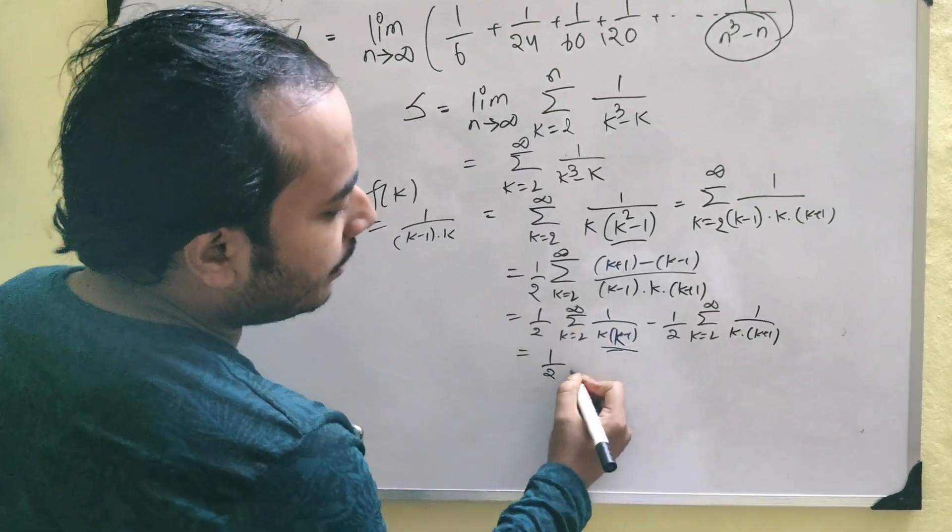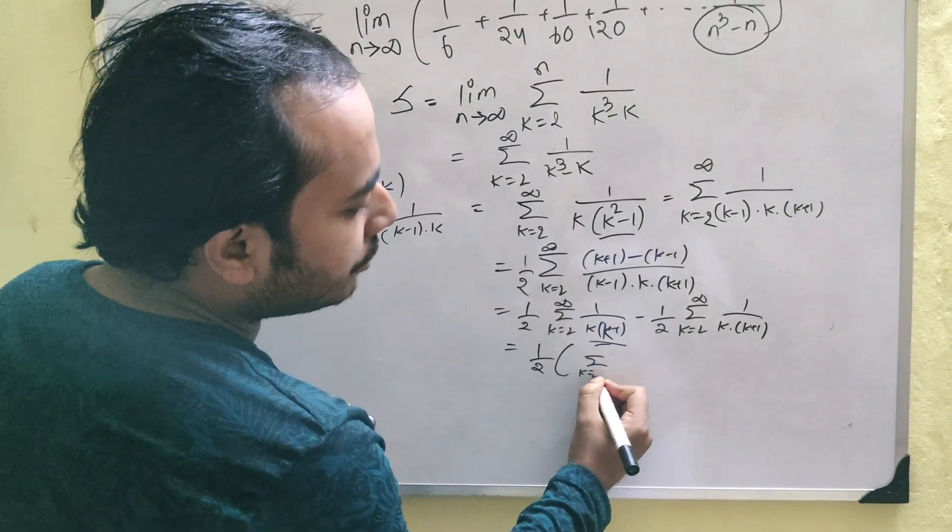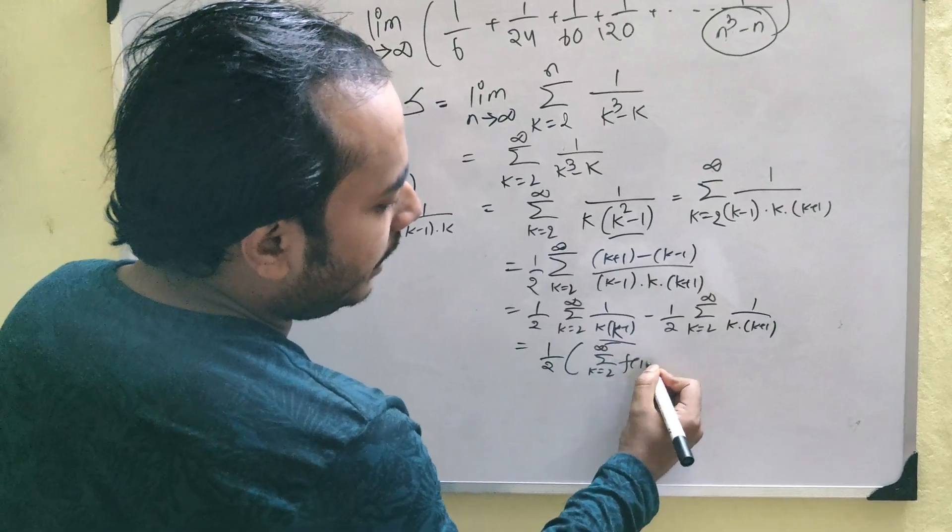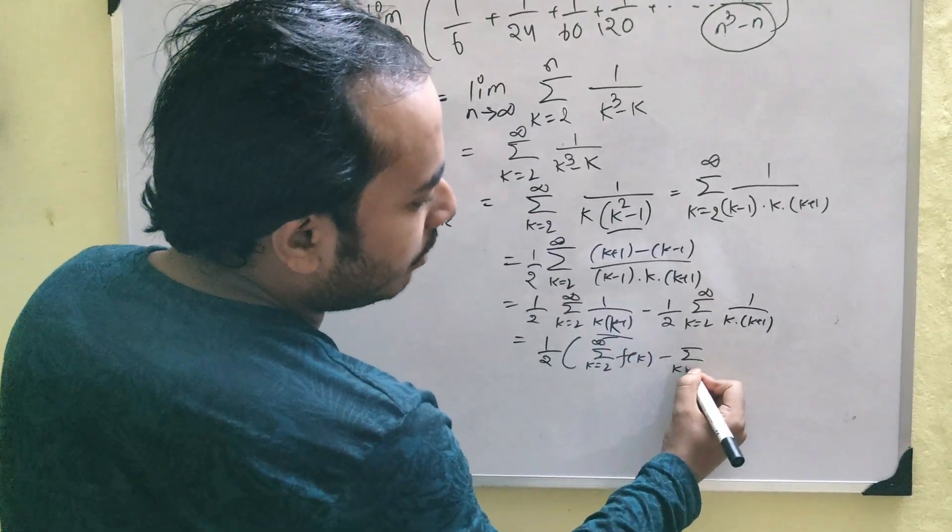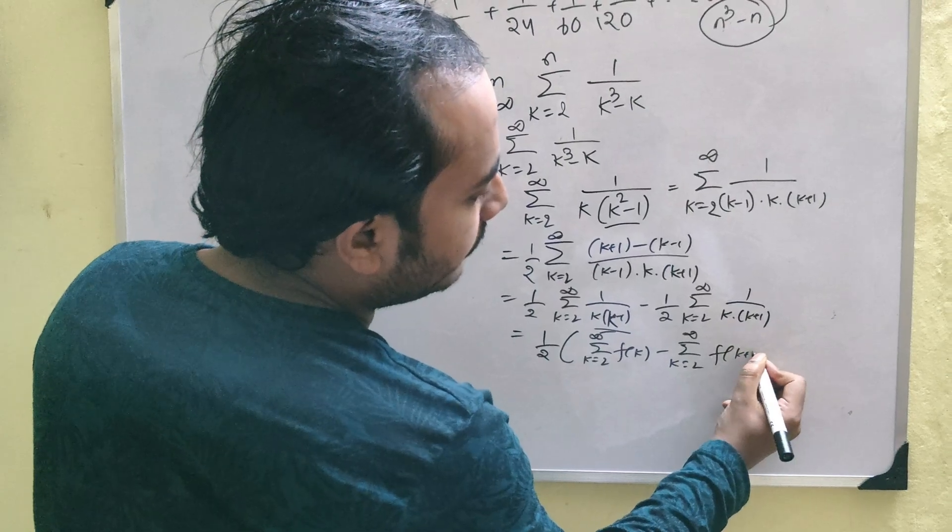So, we will simply write that half whole into summation k equals to 2 to infinity f of k minus summation k equals to 2 to infinity f of k plus 1, correct?